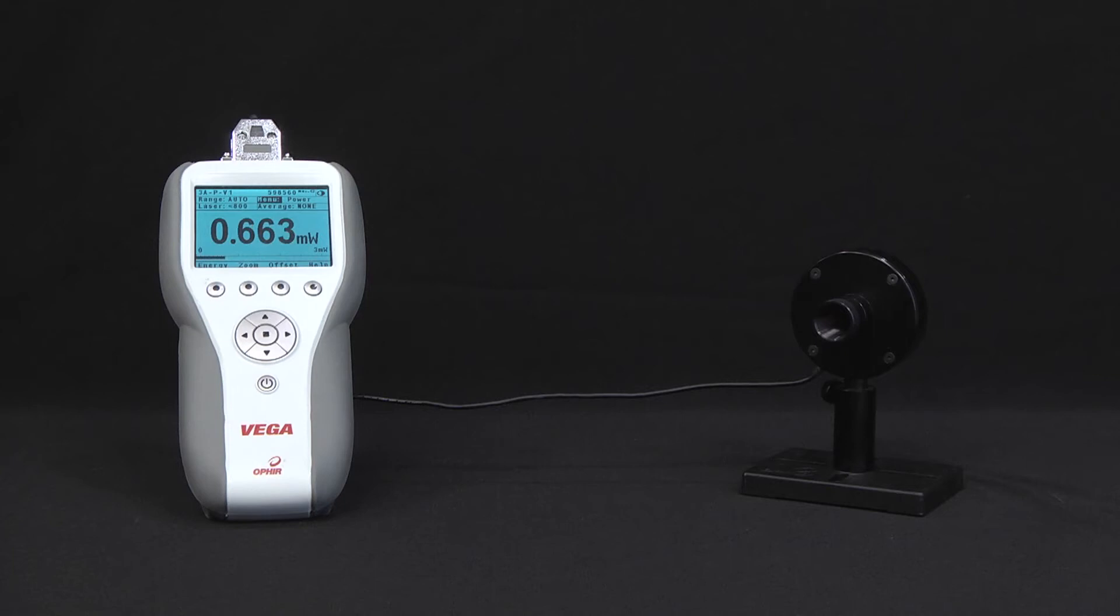The choice of sensor is physical, it depends on physical characteristics of the laser beam being measured, while the choice of meter depends on the functions you need performed with the results of your measurement. In this video we'll focus on the range of Ophir laser power sensors. First we'll have a general look at the various types of sensors so you'll know where to start.